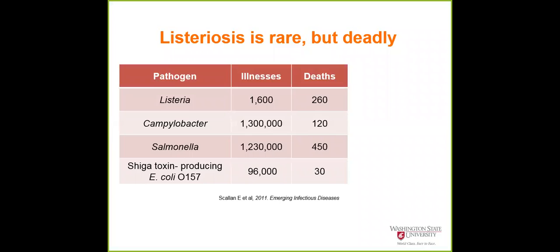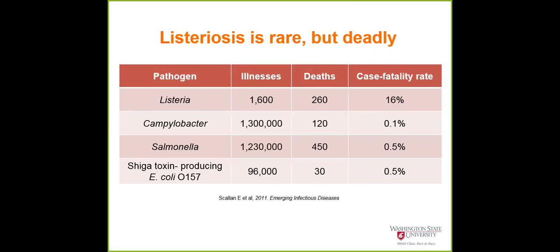When you look at this data and compare with other foodborne illnesses, Listeria doesn't cause a lot of cases compared with Salmonella or others. But the mortality is about 60% in this chart. So even though illness is not frequent, the death count is high — meaning the mortality is very high compared with other foodborne illnesses. Even in other data, it can be as high as 30%. So even though you're less likely to get Listeria illness, its mortality rate is very high.